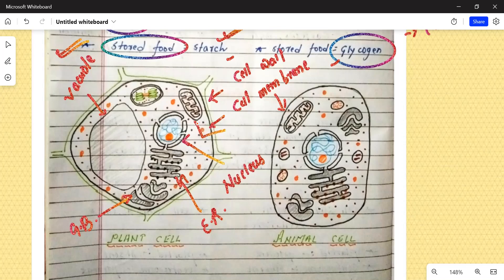And over here we have nucleus, yeh jo hai aapka, this one, this one is mitochondria and this one very important, this one is chloroplast.